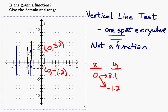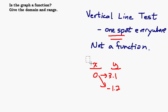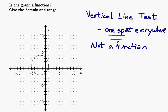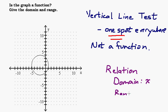A lot of times people say it's not a function, so therefore it doesn't have a domain and range. I can understand that, because a lot of times when we're talking about functions we talk about domain and range. But this is not a function — it would be what we call a relation. We could still identify the domain and range of this relation. The domain is going to be your x values and the range is going to be your y values. A relation still has a domain and range; it's just that each member of the domain is not paired with exactly one member of the range — so therefore it's not a function.